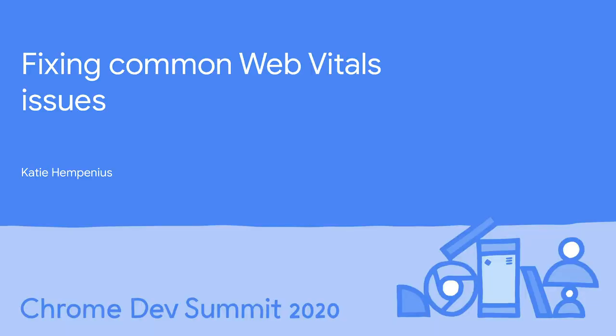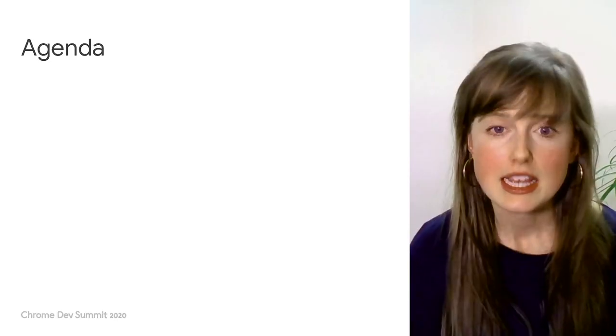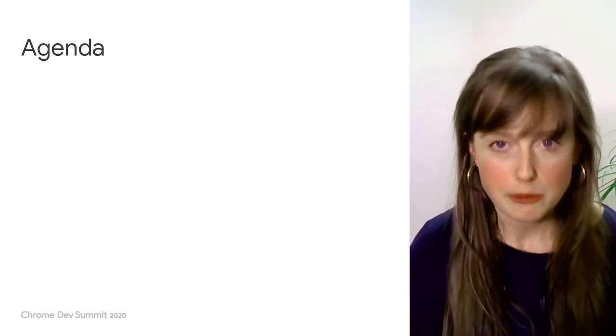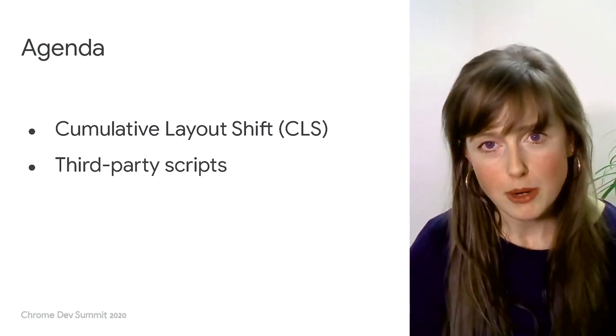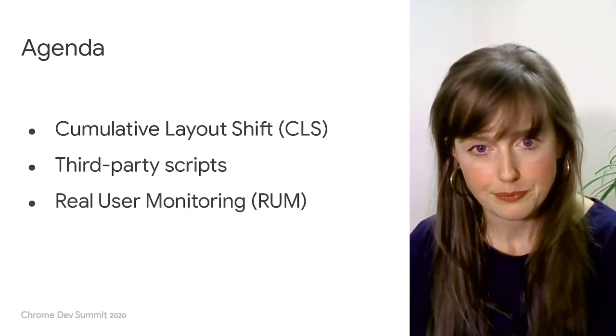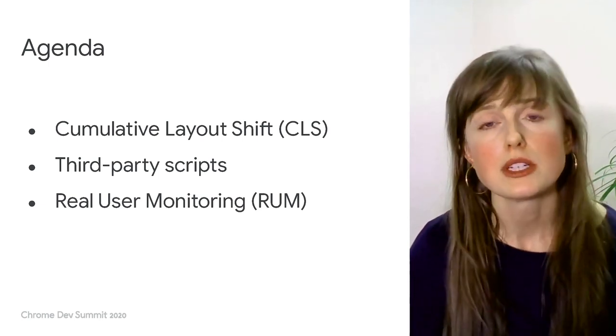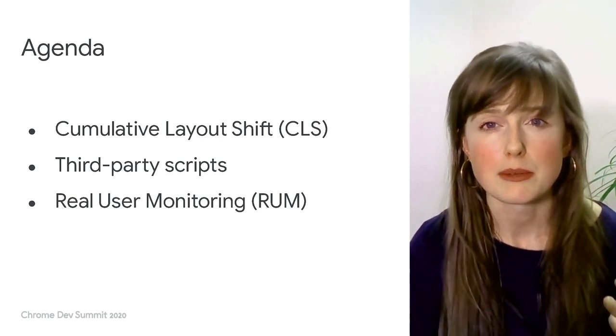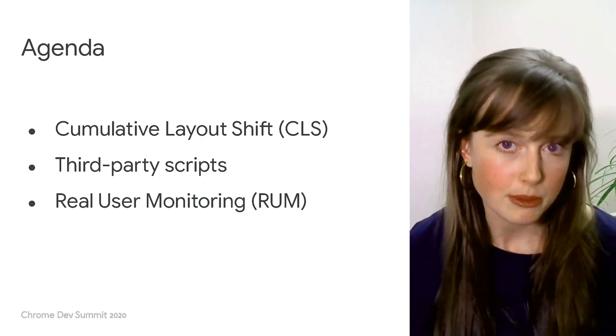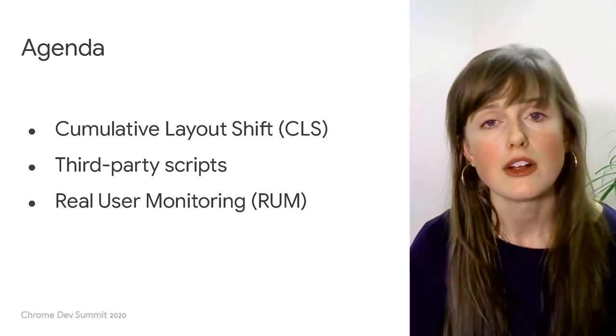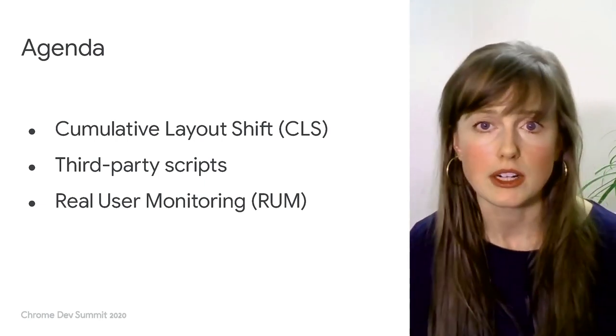There are a handful of challenges and points of confusion about optimizing for web vitals that I see really frequently. The goal of today's presentation is to cover as many of these issues as possible in the next 10 minutes. The three themes I'm going to be talking about are cumulative layout shift, third-party scripts, and RUM. I really want to stick to discussing some of the edge cases and details that people tend to find confusing, as well as highlighting some performance techniques that you might not be aware of.